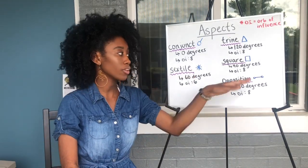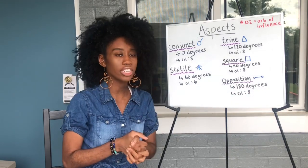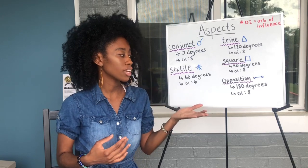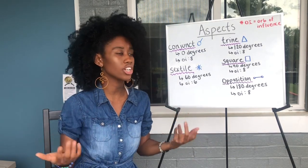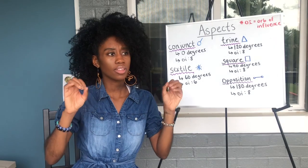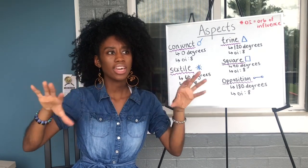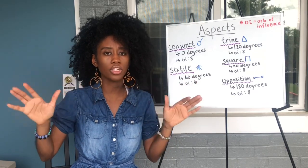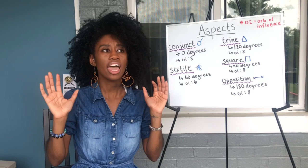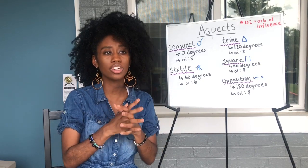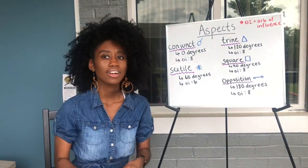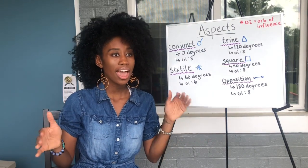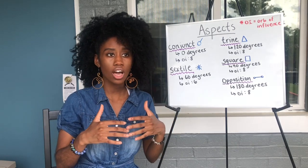Oppositions are 180 degrees with an OI of 8, meaning they can be anywhere between 172 and 188 degrees. Planets in opposition create a pull effect — those planets are pulling you in two different directions, and your life's work is to make those two energies merge together. They're like two people in a relationship that want two different things; they have to learn to compromise to make it work.